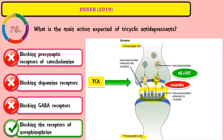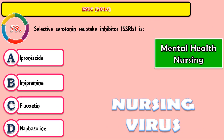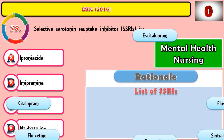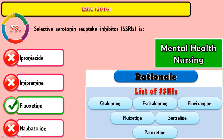When you administer a tricyclic antidepressant, that norepinephrine and serotonin will be reuptaken from the presynaptic area itself and will not reach the postsynaptic area. Question 79: Selective serotonin reuptake inhibitors — the correct answer is fluoxetine. The list of SSRIs includes: citalopram, escitalopram, fluvoxamine, fluoxetine, sertraline, and paroxetine.